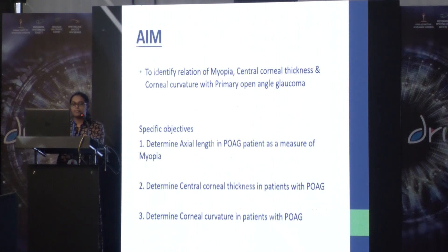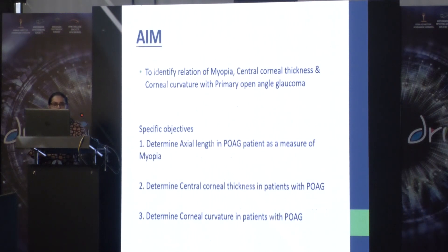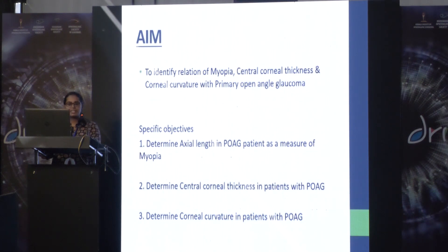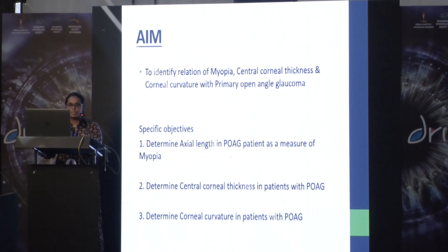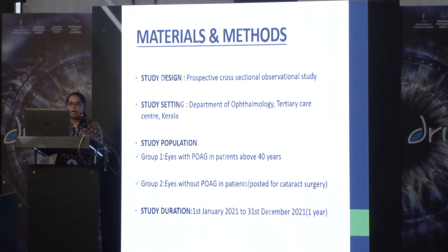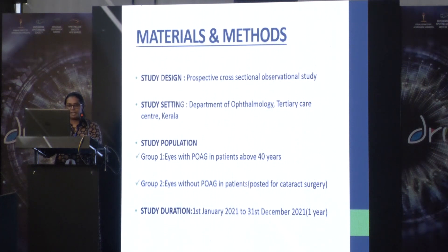The aim of this study is to identify the relation of myopia, central corneal thickness, and corneal curvature with primary open angle glaucoma, with specific objectives of determining axial length in primary open angle glaucoma patients as a measure of myopia, and to determine central corneal thickness and corneal curvature in patients with primary open angle glaucoma.